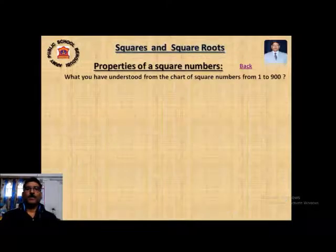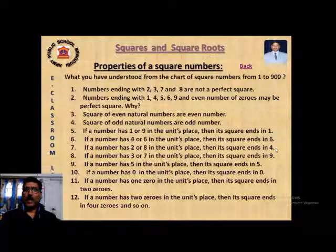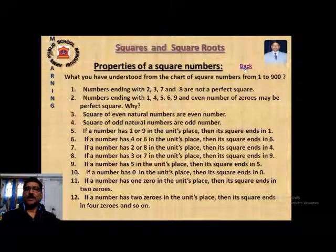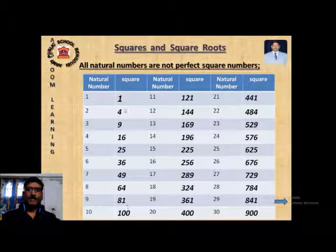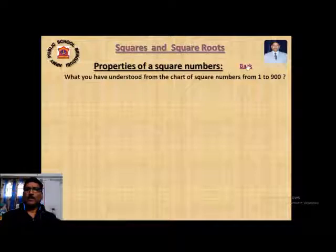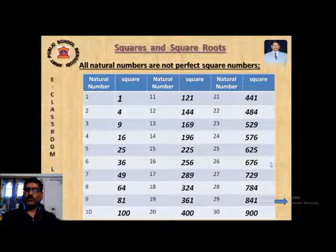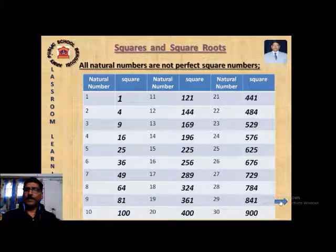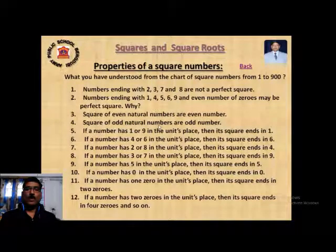From the above chart, we understand that numbers ending with 2, 3, 7, and 8 are not perfect squares. If you look back at the table, the unit digit of any square number is never 2, 3, 7, or 8. This pattern holds throughout the table, confirming that numbers ending with 2, 3, 7, or 8 are not perfect square numbers.